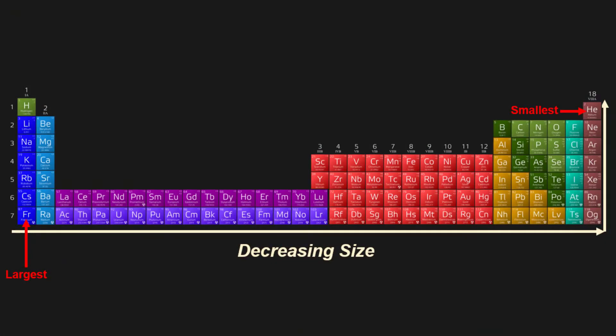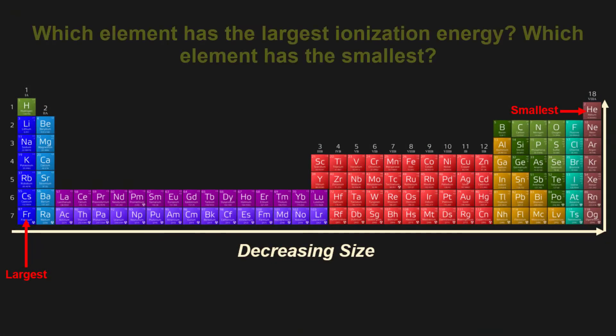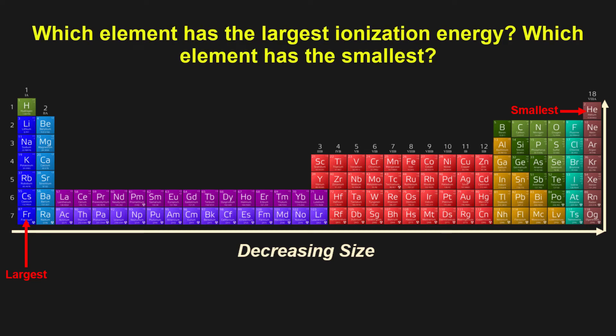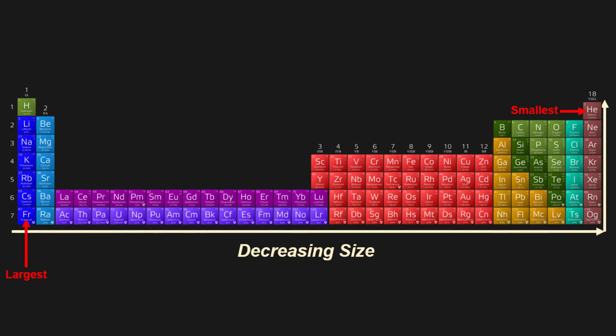This brings us to the last question: which element has the largest ionization energy and which has the smallest? The general trend of the periodic table is that elements get smaller as you go up and to the right, and larger in the opposite direction, making helium the smallest element and francium the largest. There are a couple of exceptions, but we'll focus on the general trend.